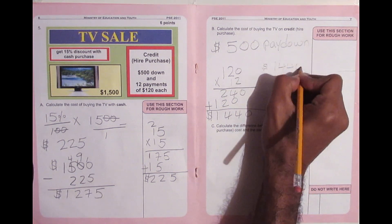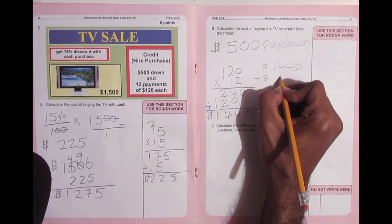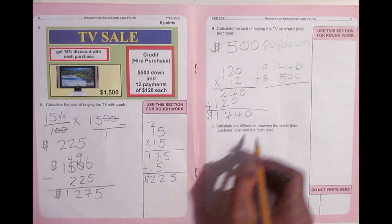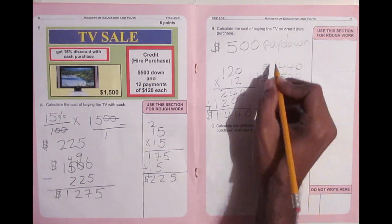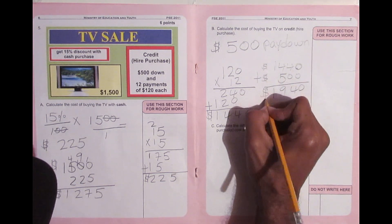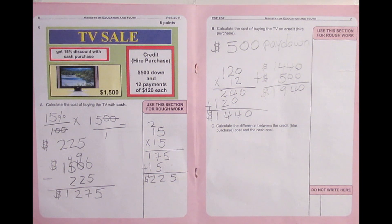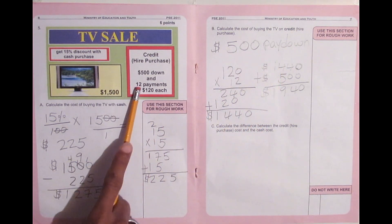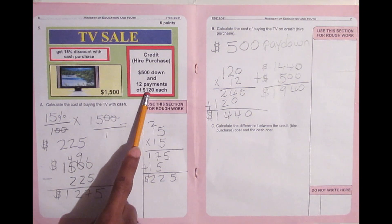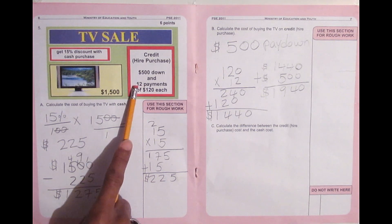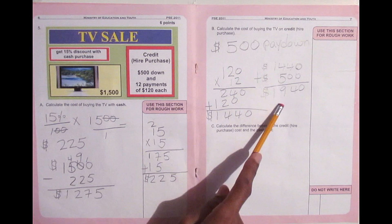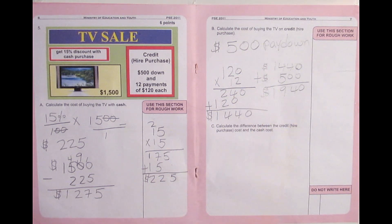One thousand four hundred and forty dollars for the 12 months at 120, plus the five hundred dollars paid on when I got the TV, gives me my total hire purchase price. Zero plus zero is zero, 4 plus 0 is 4, 5 plus 4 is 9, and 1 plus nothing is 1. So my hire purchase price is one thousand nine hundred and forty dollars. I got the TV, paid on five hundred dollars, then 120 each month for 12 months — 120 times 12 is 1440, plus 500 equals one thousand nine hundred and forty dollars.